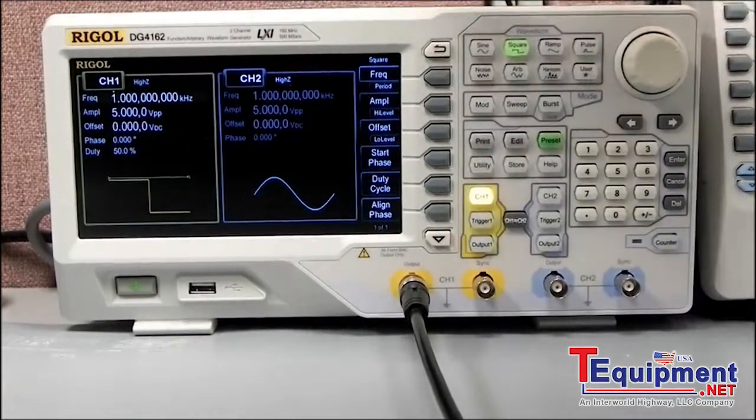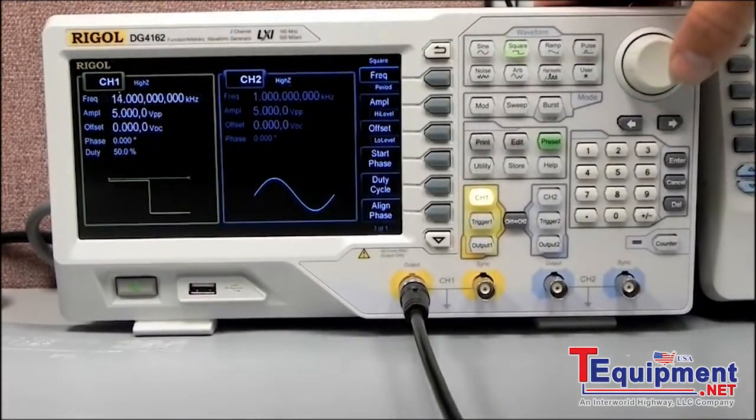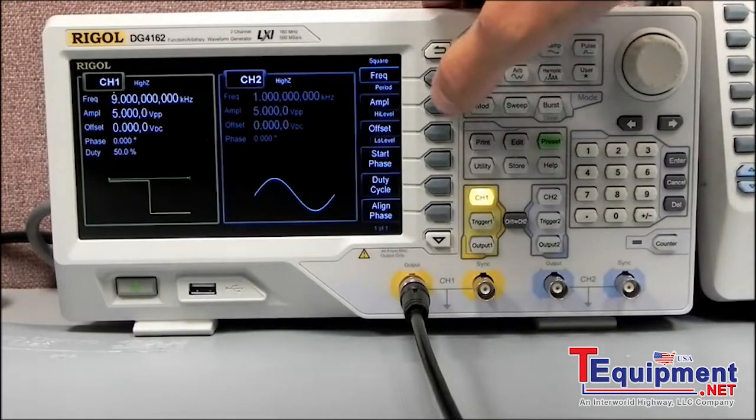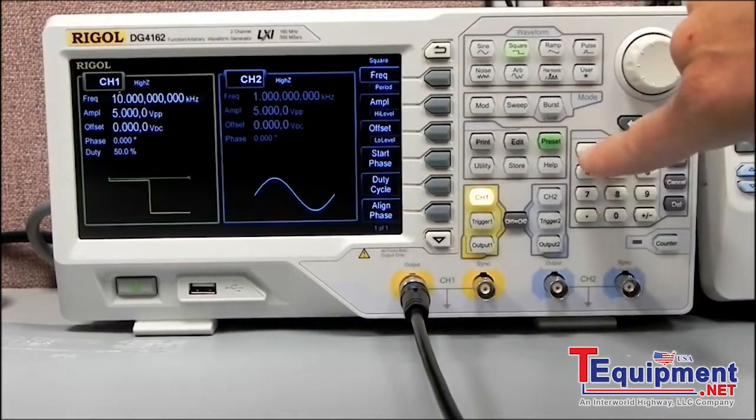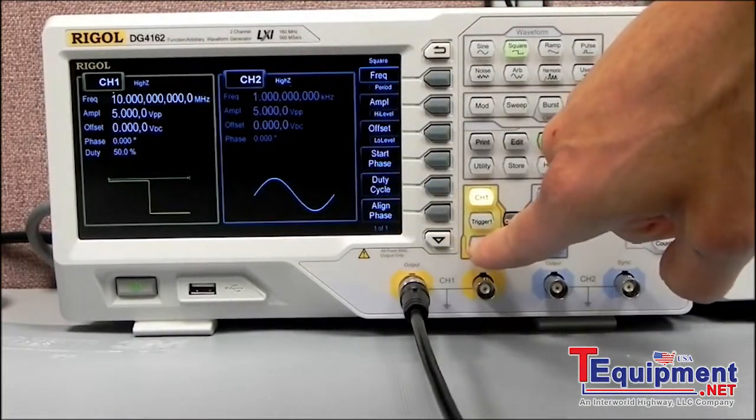Let's go to frequency, and there are a few different ways we can enter that information. We can either use a scroll wheel, and we can increase that frequency this way, or we can use the actual keypad so we could go 10 megahertz as an example. And now let's turn that output on.